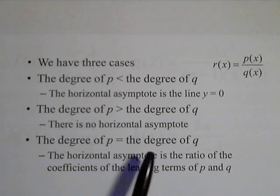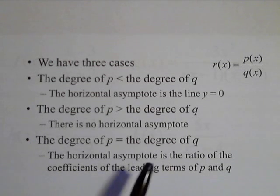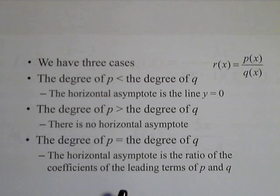If the degree of the numerator is equal to the degree of the denominator, they're growing at about the same rate. So the horizontal asymptote is at what's called the ratio of the coefficients of the leading terms of P and Q.